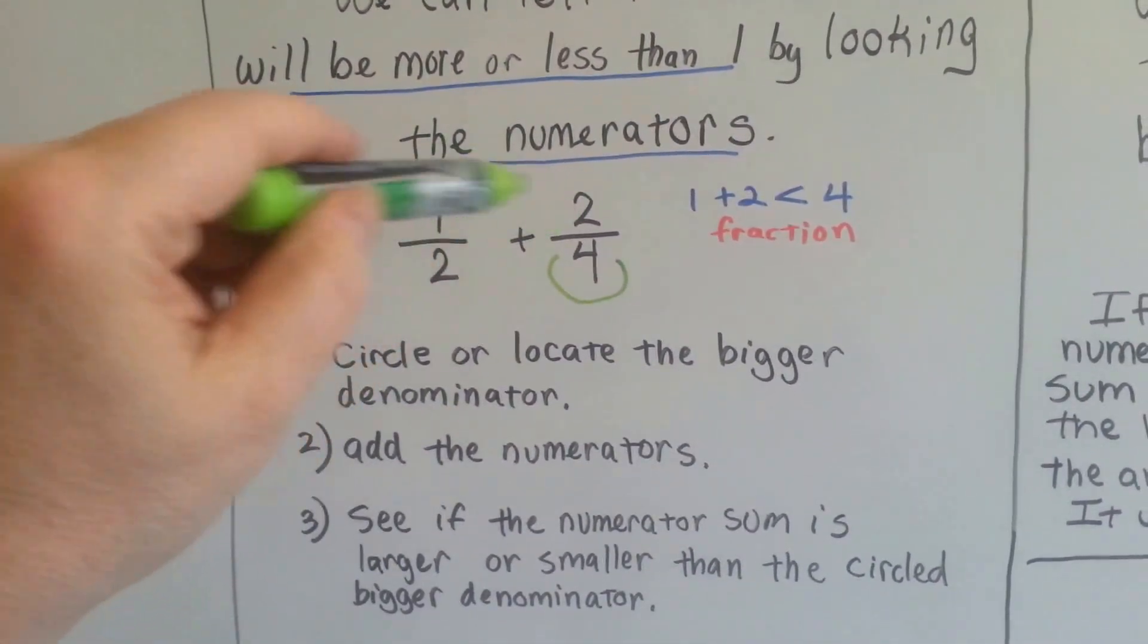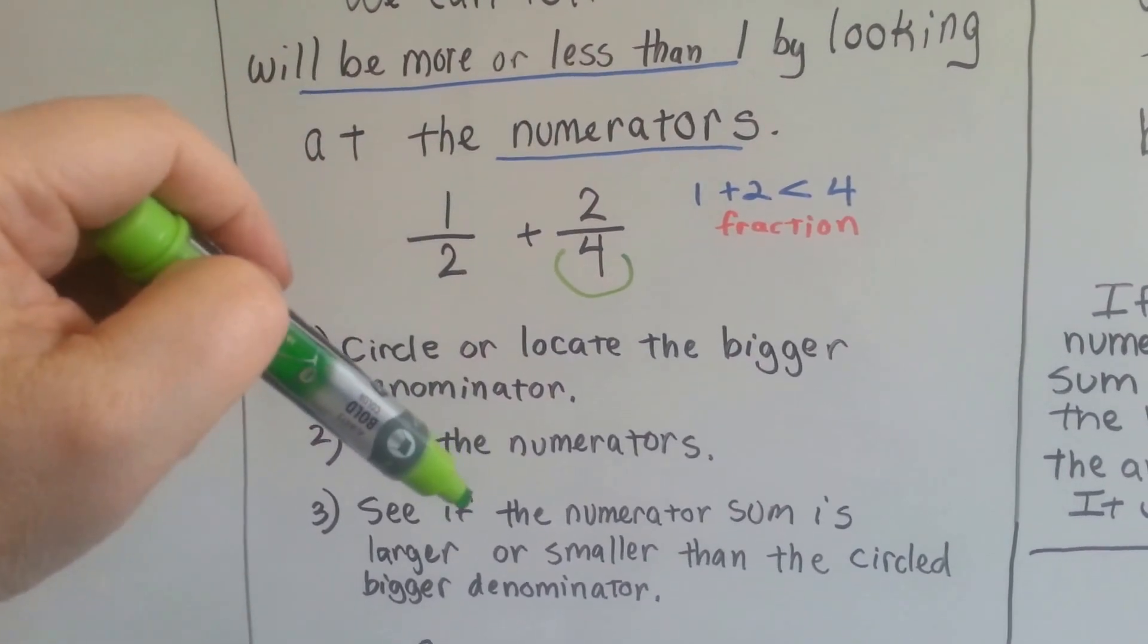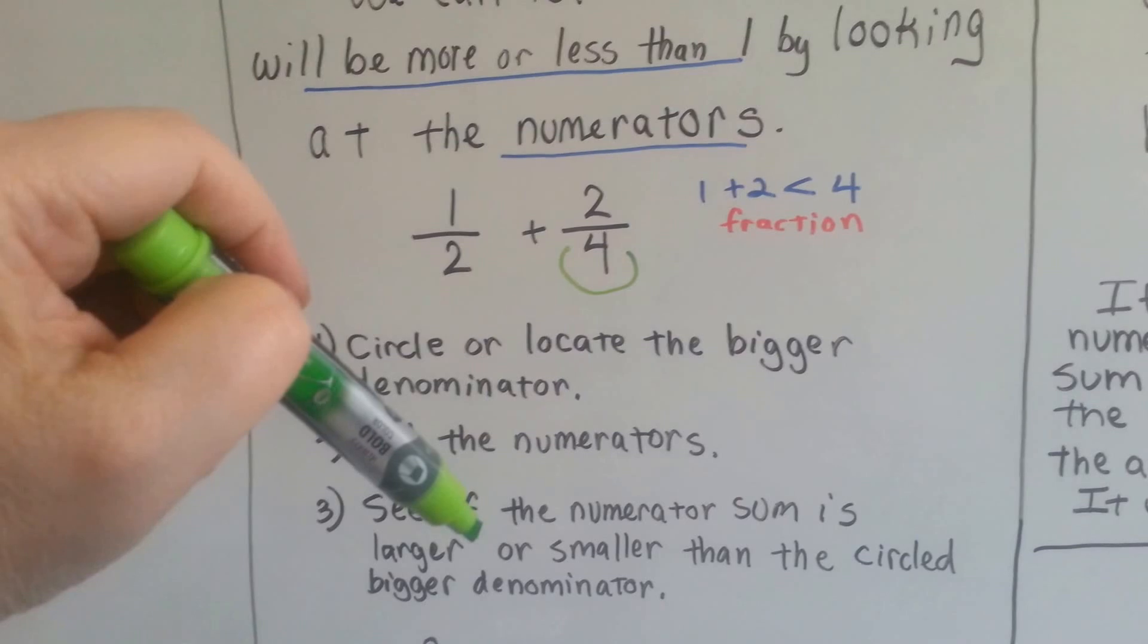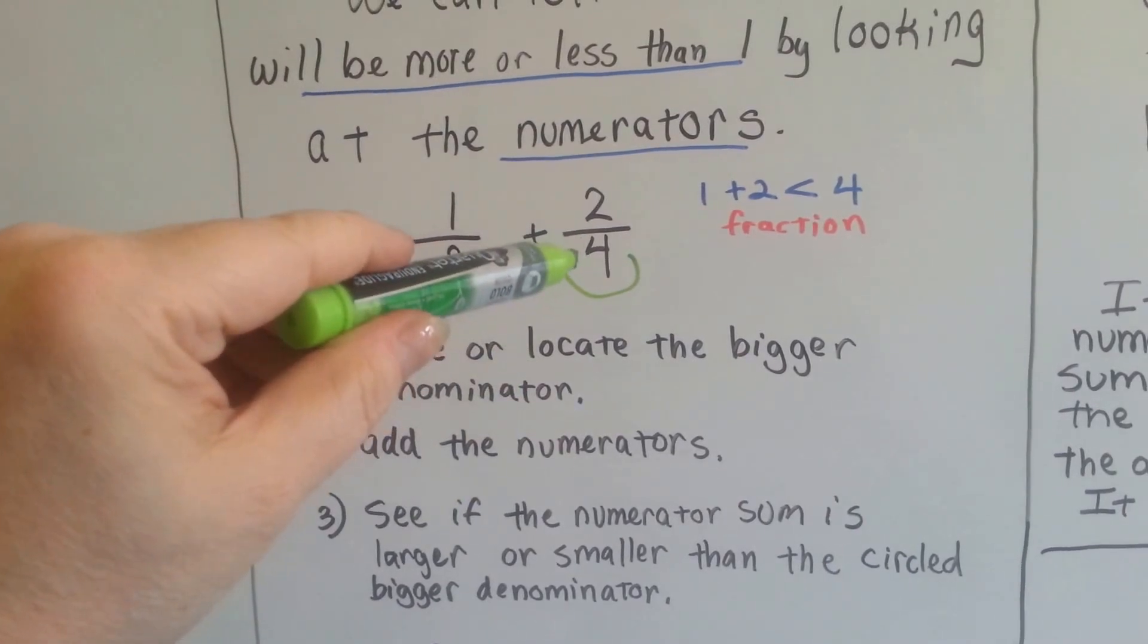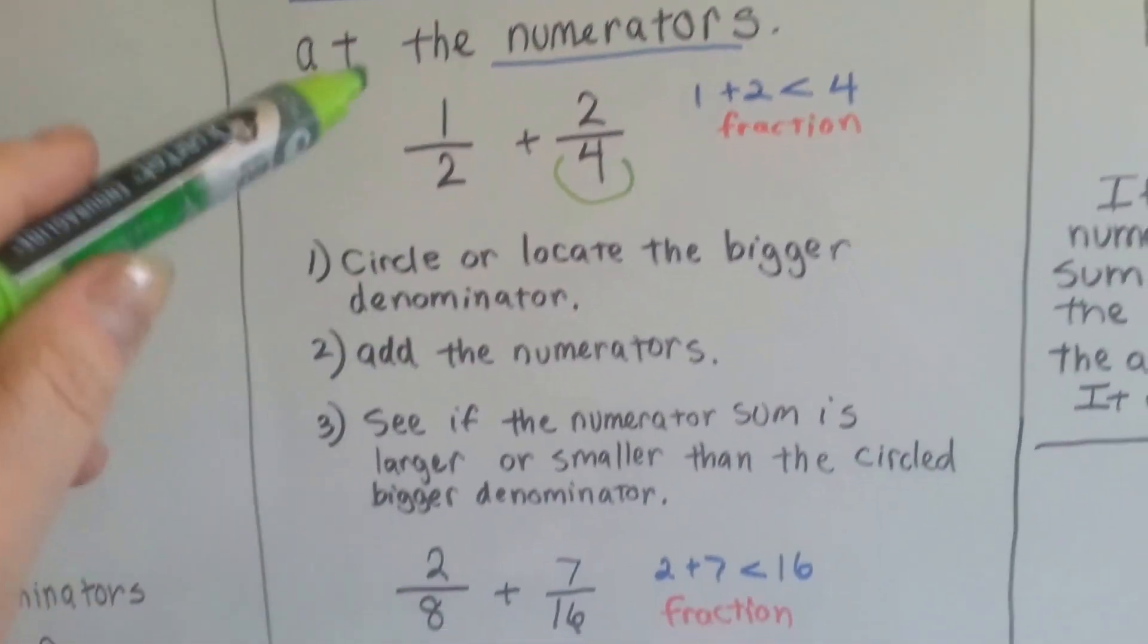We add the numerators. 1 plus 2 is 3. We see if the numerator's sum is larger or smaller than the circled denominator. 3 is smaller than 4. Then the answer will be a fraction.